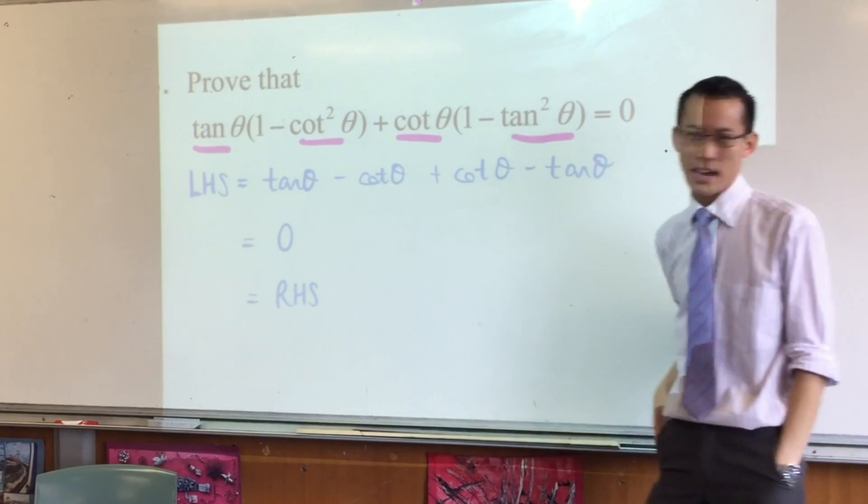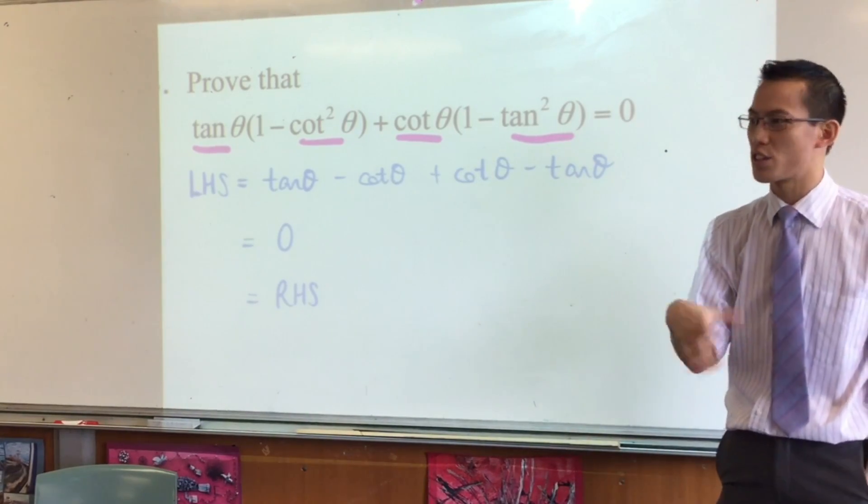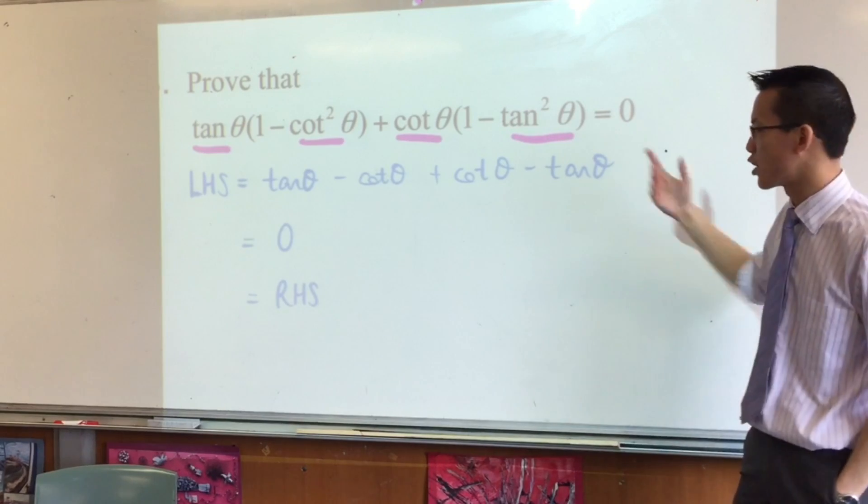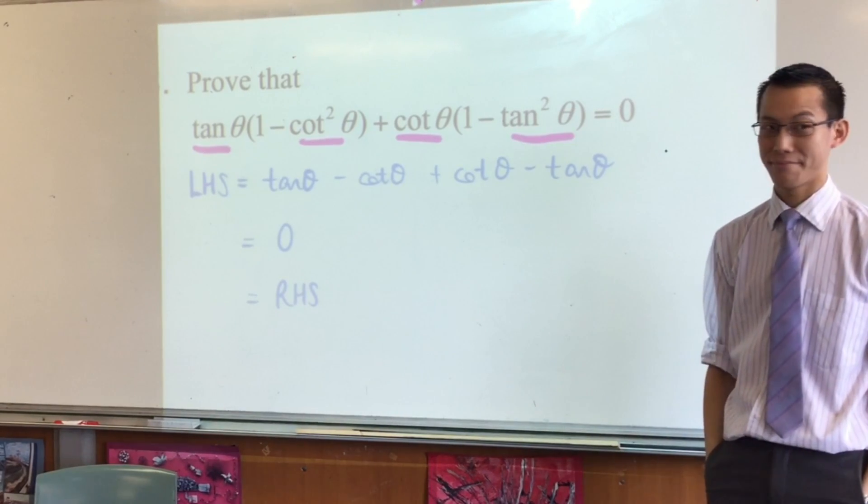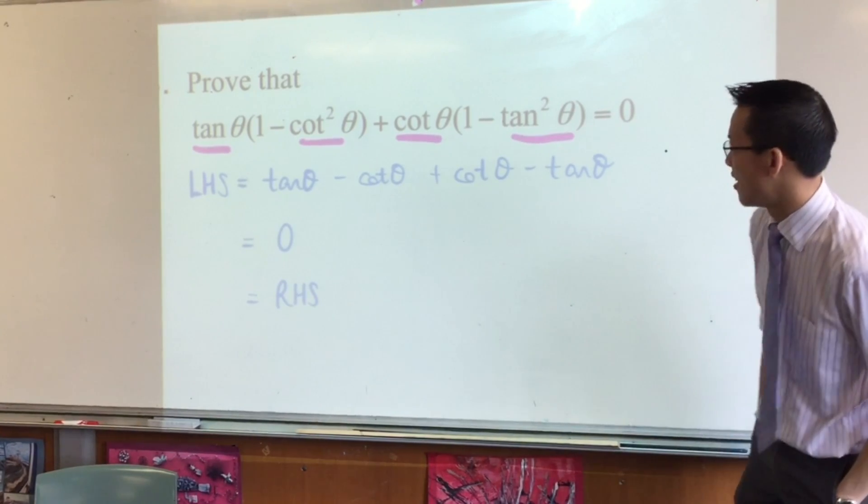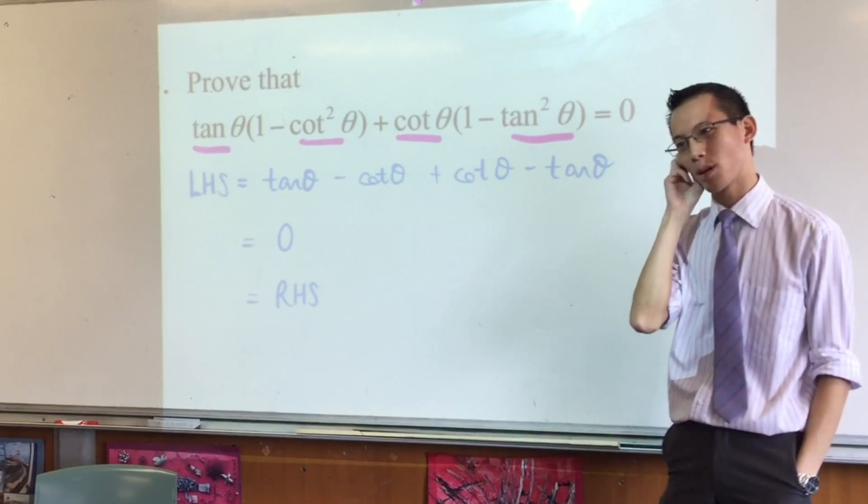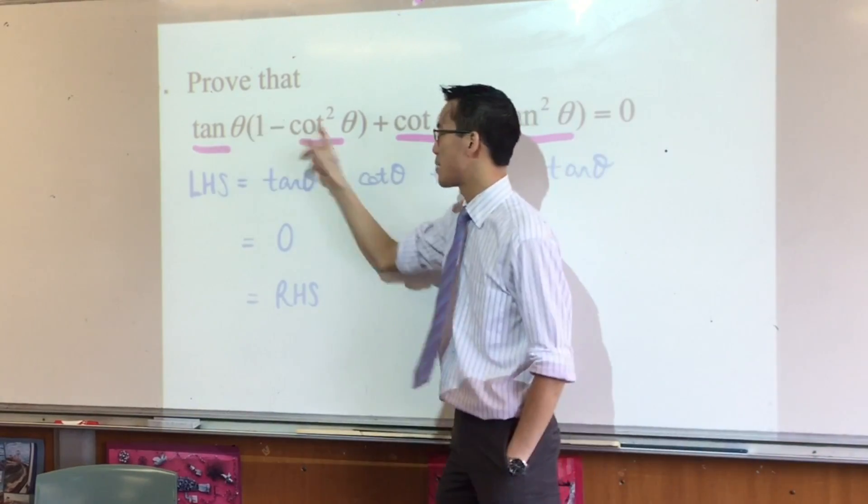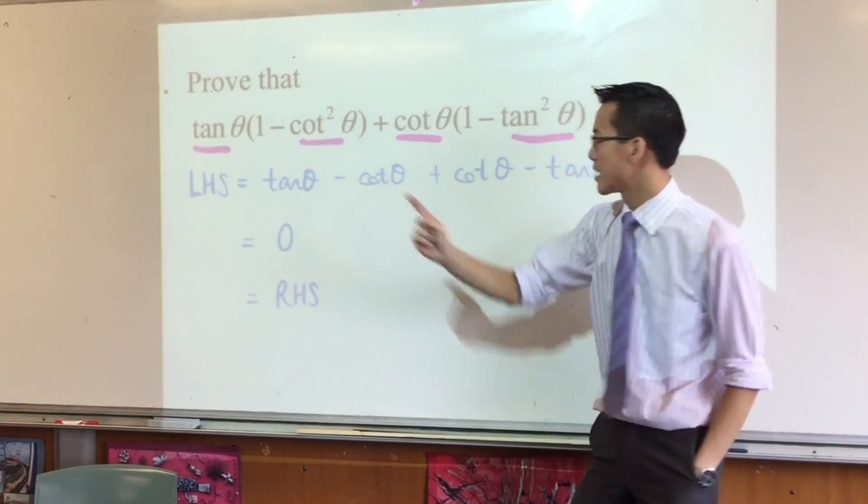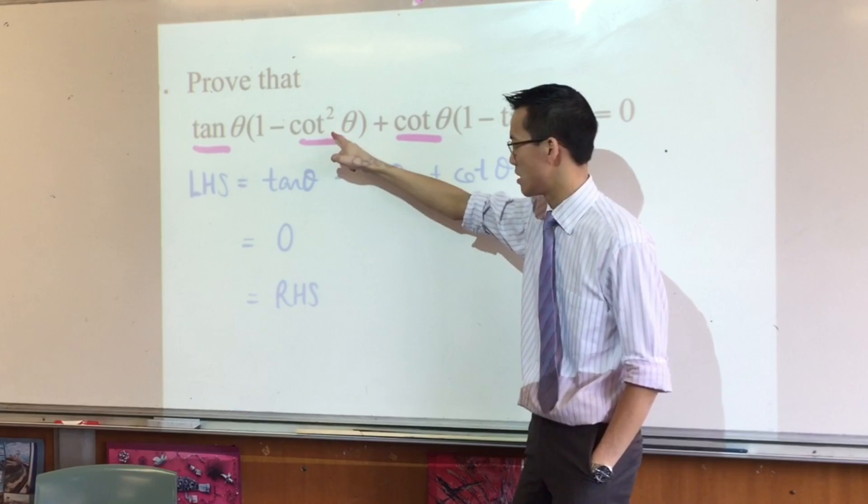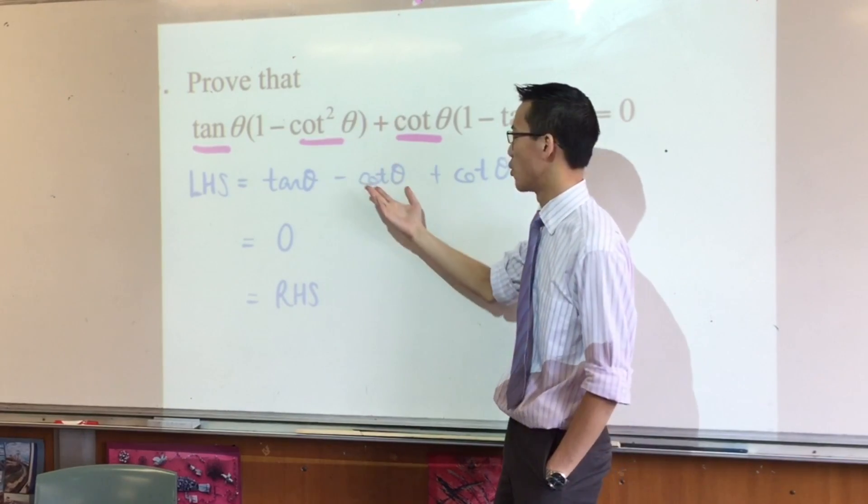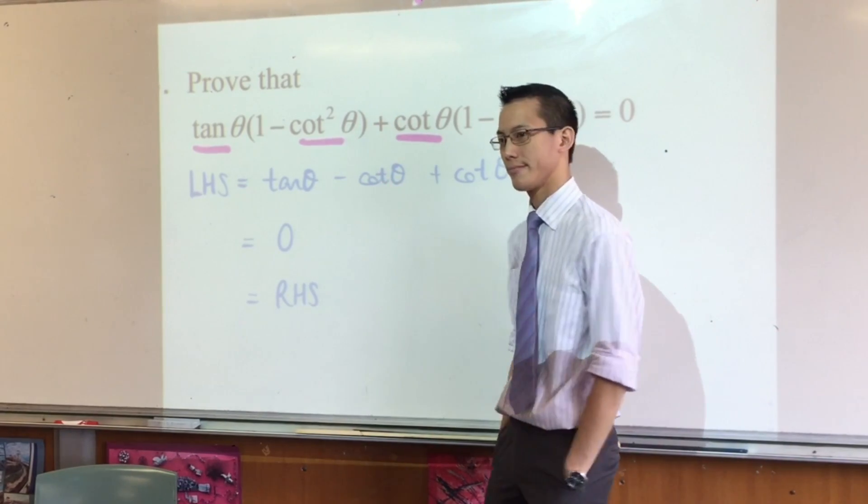So I didn't devolve down to sines and cosines. I could have, but it would just be the long way around. Tan is the reciprocal of cot. So tan times cot is 1. But there's actually not just a cot there, there's cot times cot. So one of them is left behind. Thank you.